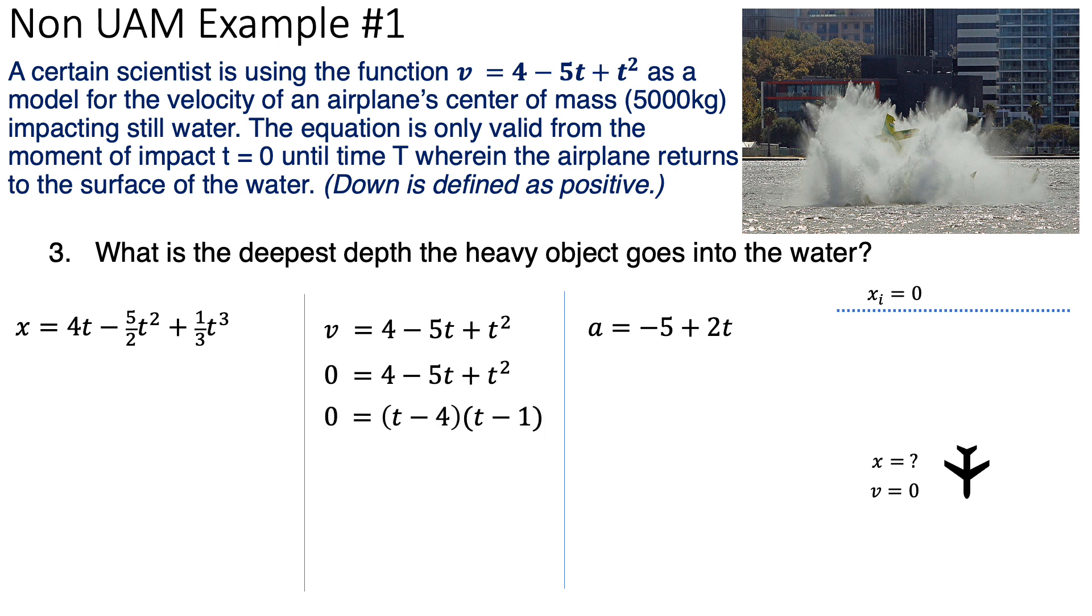I complete the square and find that that is t minus 4 times t minus 1. And there's a critical time at 4 and a critical time at 1. Meaning, the velocity is 0 at time 4 and time 1. I'm going to pick the earlier time because it's the one relevant. I'm figuring out the deepest from the moment it crashed, which was time equals 0. The sooner time is 1. I plug that time into my position formula, and I calculate it and find out that the position 1 second in is 2.833 meters.